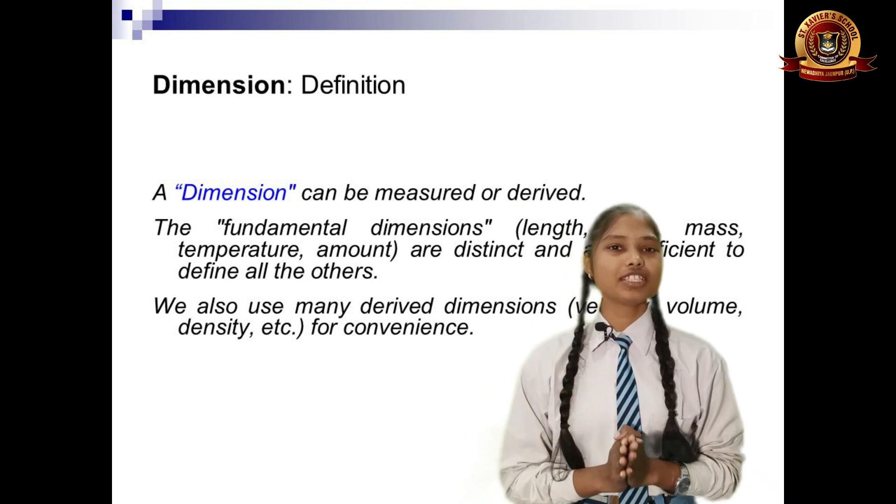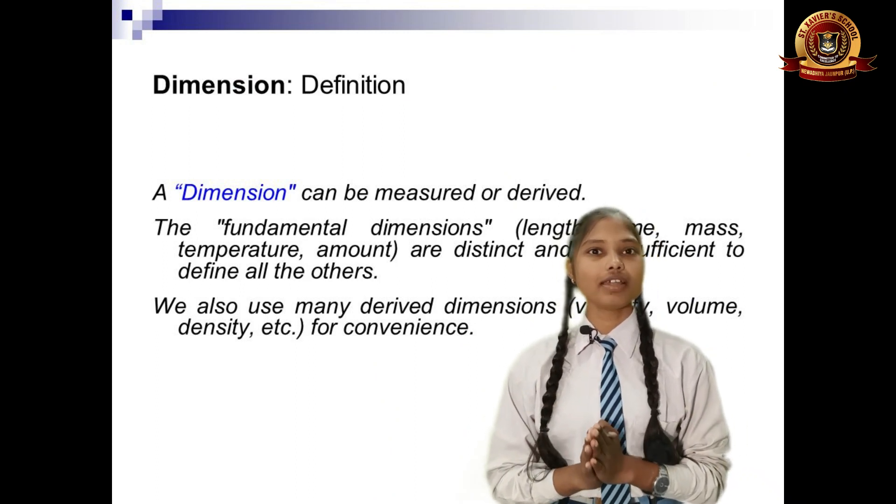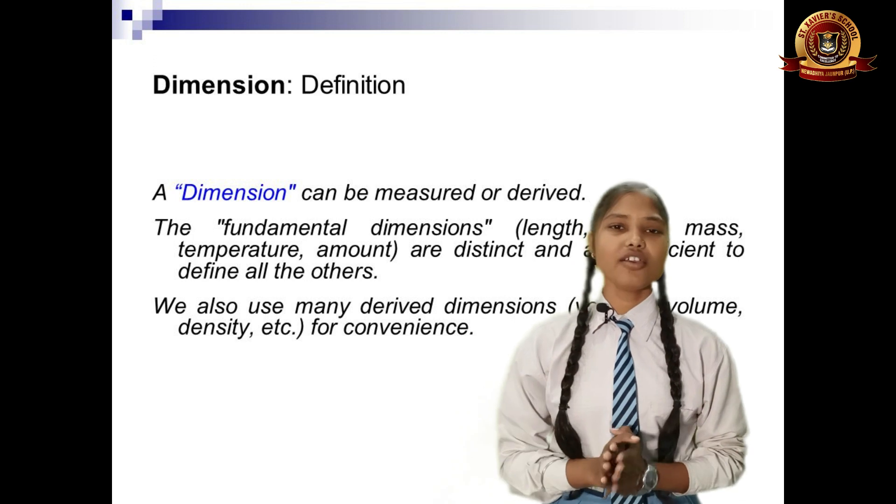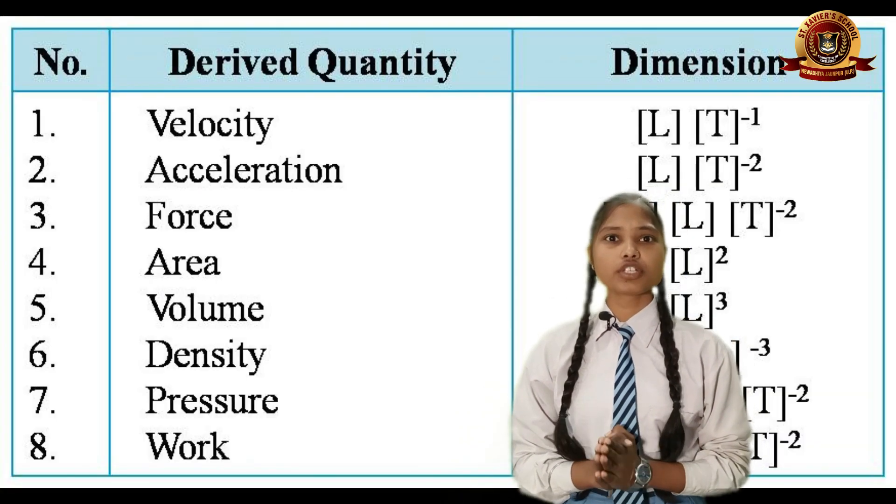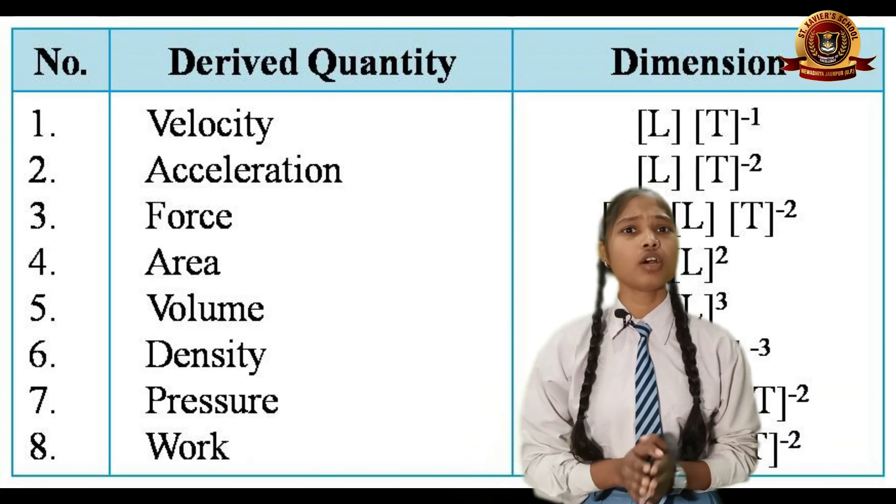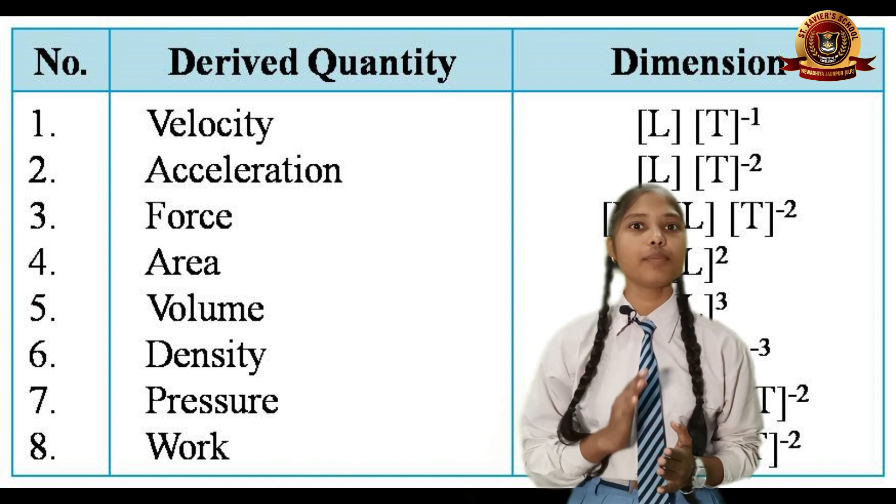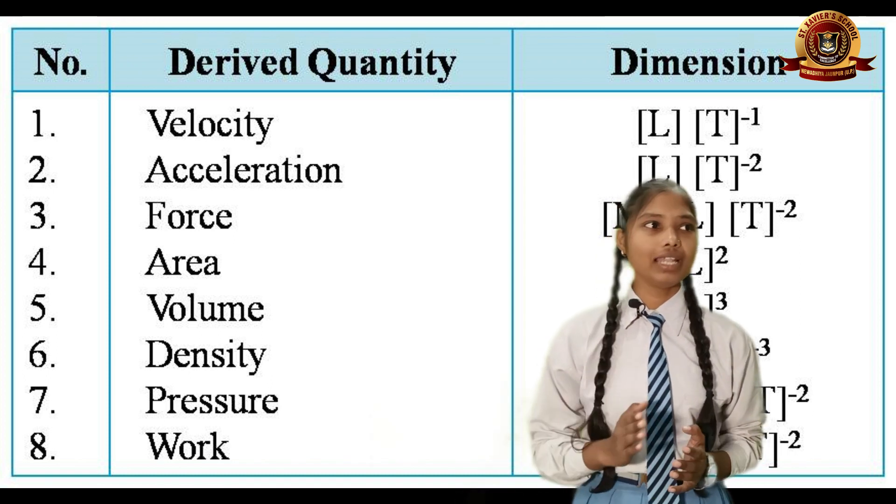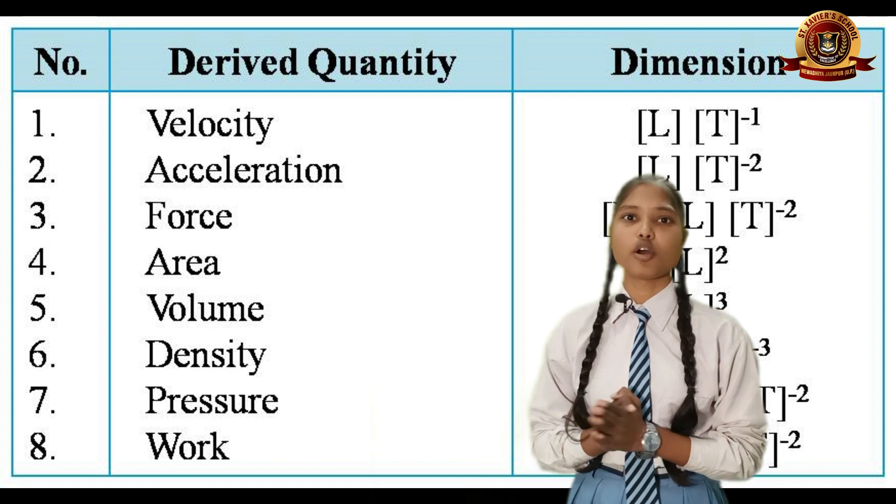Now, dimensions. Physical quantities represented in the form of powers are called dimensions. For example, the dimension of force is [M][L][T]^-2, the dimension of work is [M][L]^2[T]^-2, and the dimension of acceleration is [L][T]^-2.